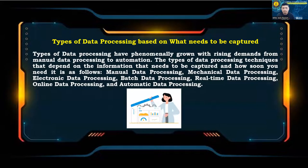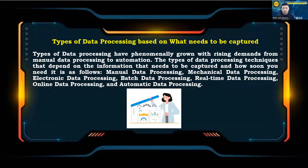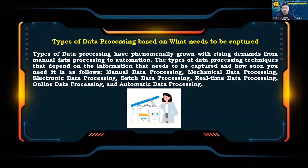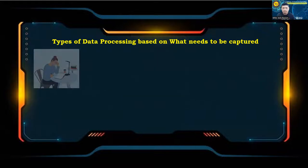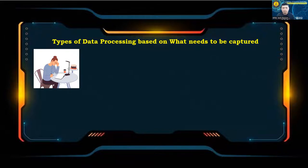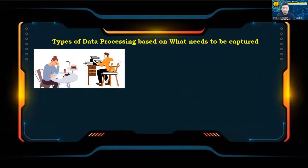Types of data processing have phenomenally grown with rising demands, from manual data processing to automation. Manual Data Processing: The manual data processing method is where data entry specialists record and process data manually through ledgers, paper record systems, and other manual data entry processes. Mechanical Data Processing: Mechanical data processing processes data through mechanical devices such as typewriters, mechanical printers, and other devices.